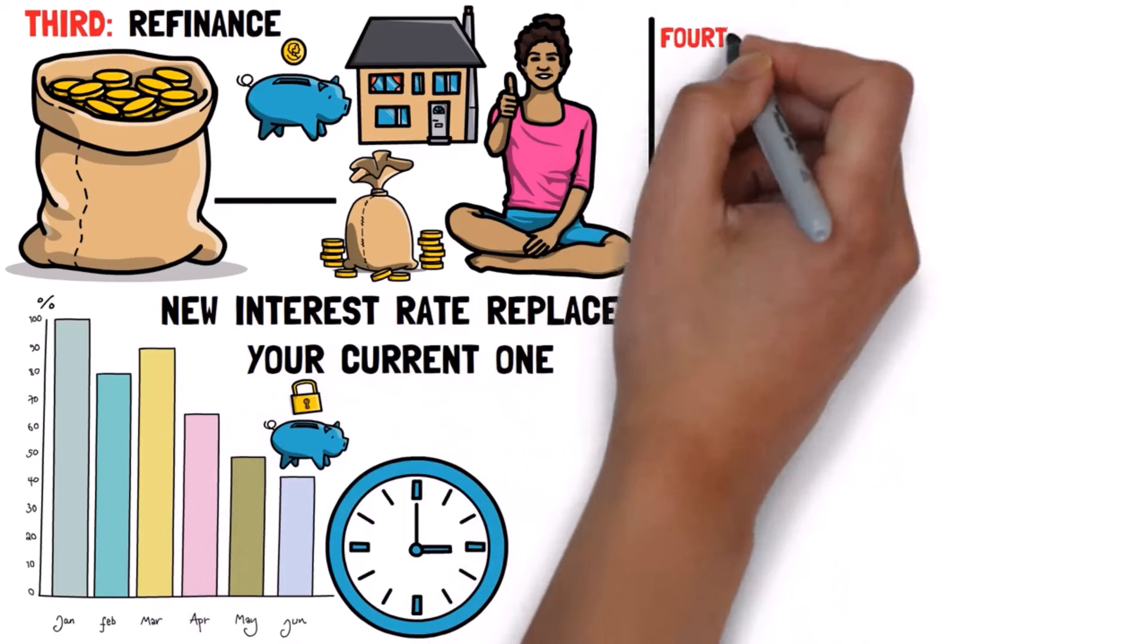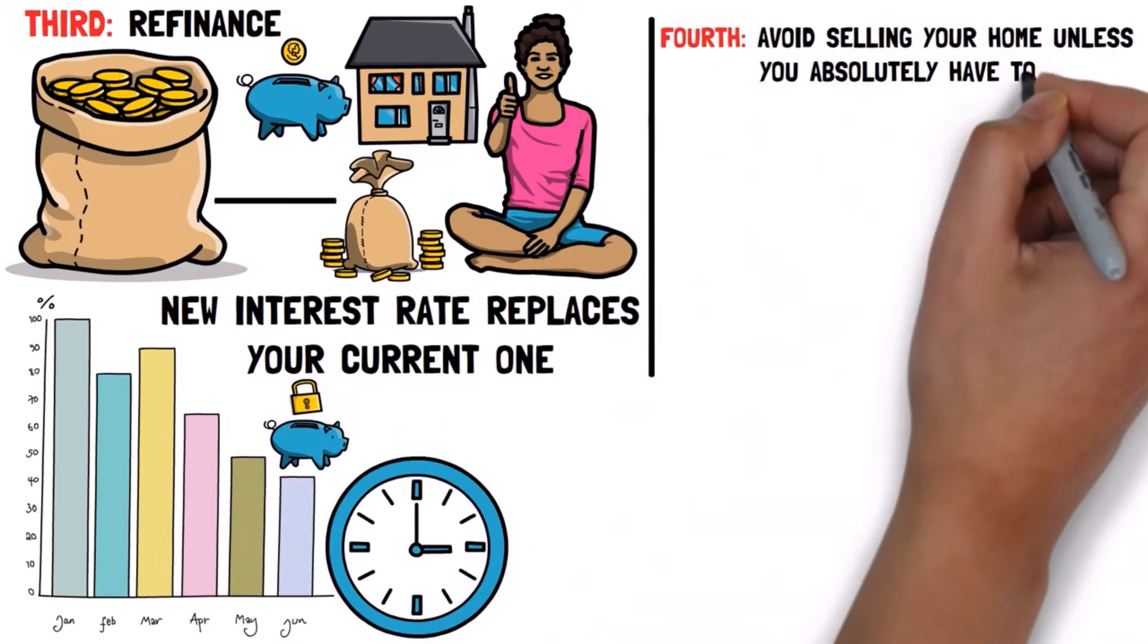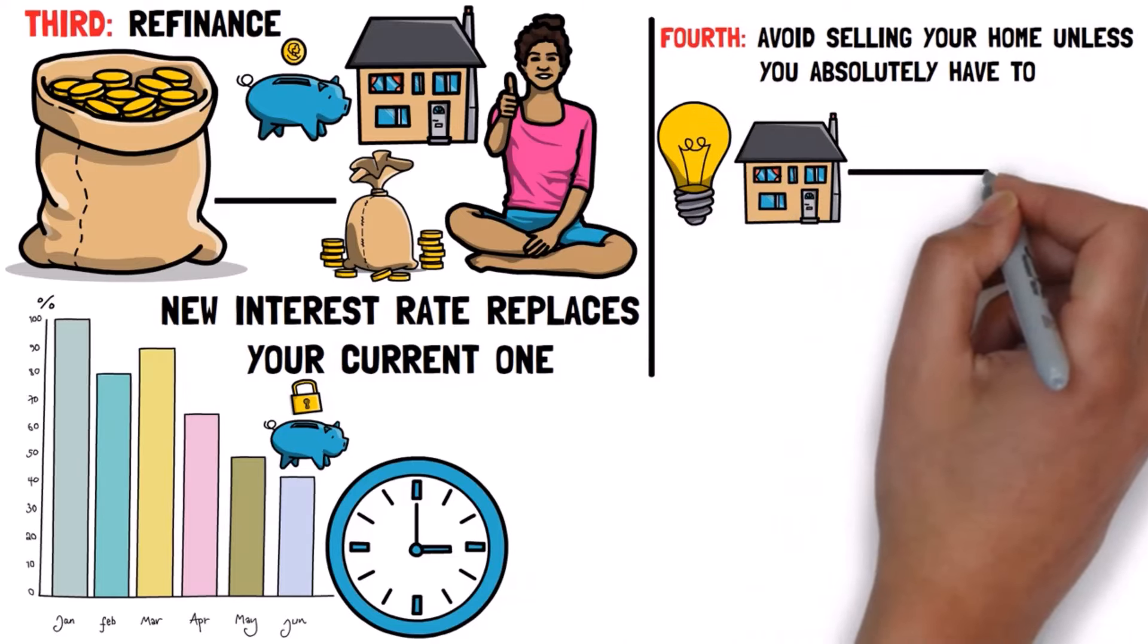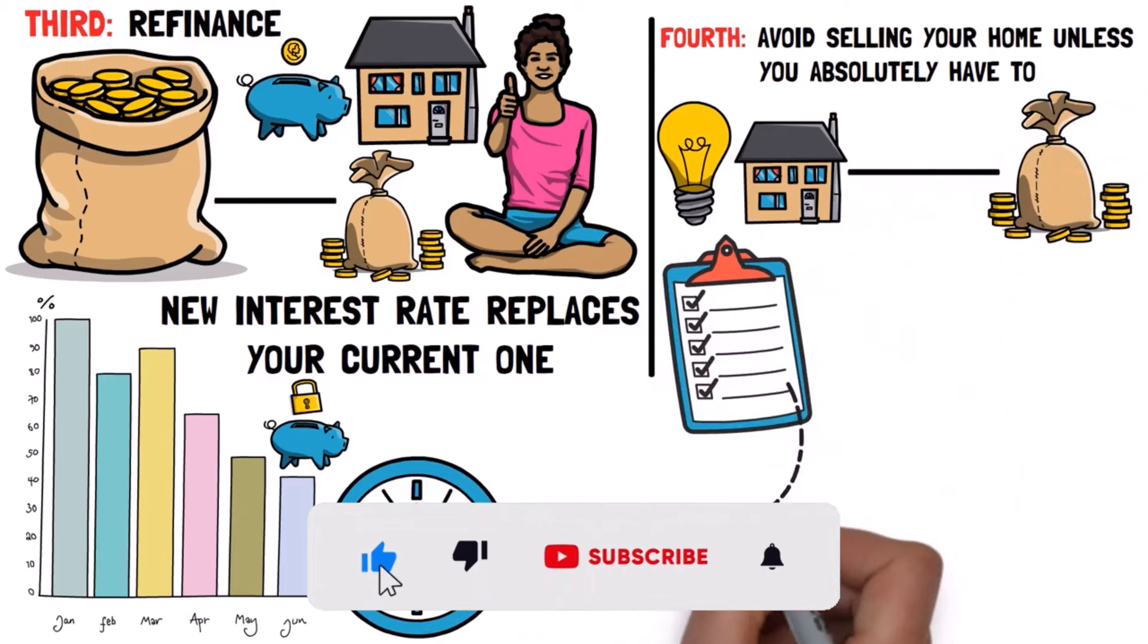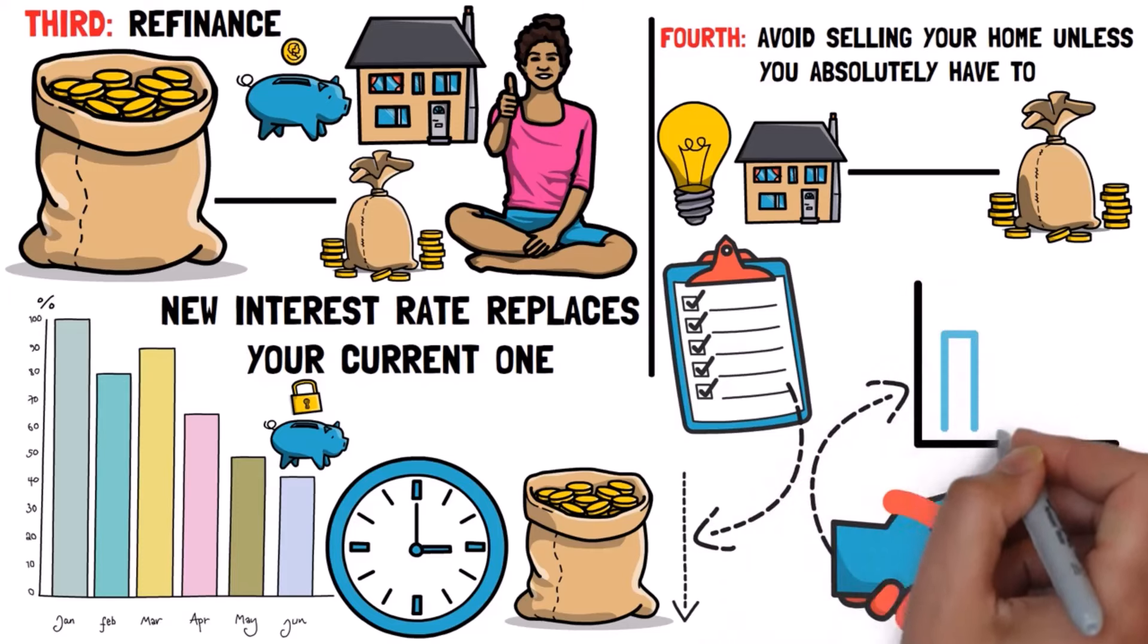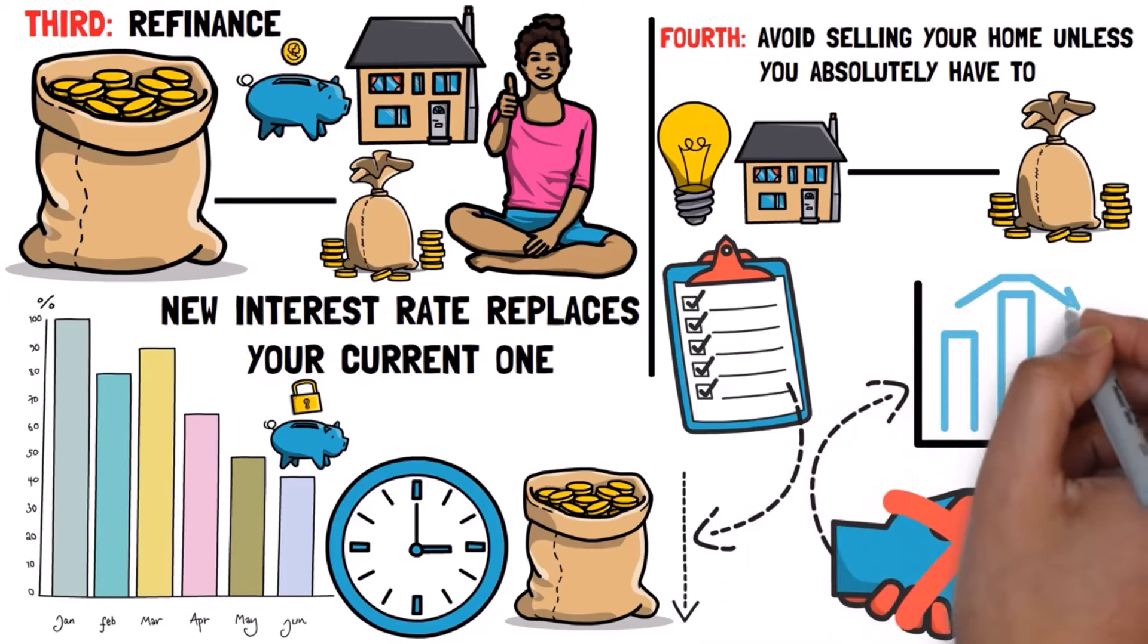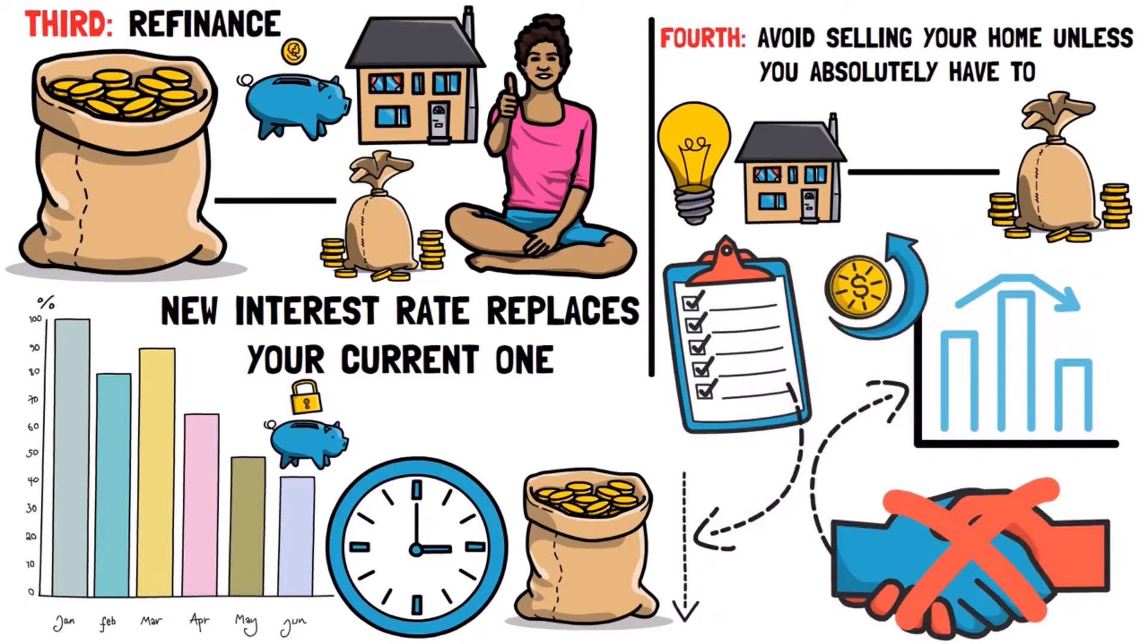Fourth, avoid selling your home unless you absolutely have to. The truth is, real estate values really only matter if you intend on selling. So, everything I mentioned so far is really about bringing your monthly payments down as low as possible, so that if you don't have to sell, you don't need to. On top of that, by not selling, you'd also be able to ride out any short-term fluctuations in price until eventually the market recovers.